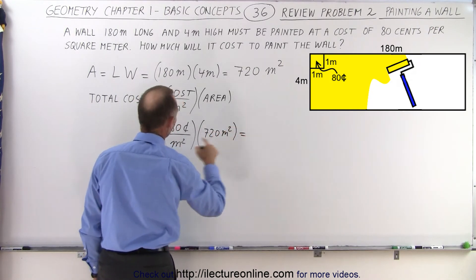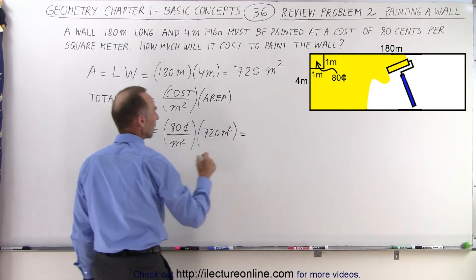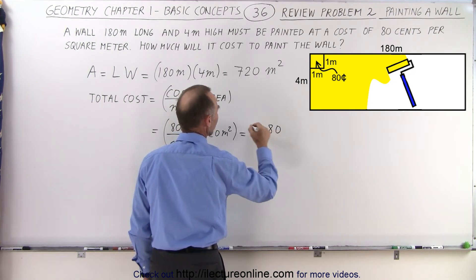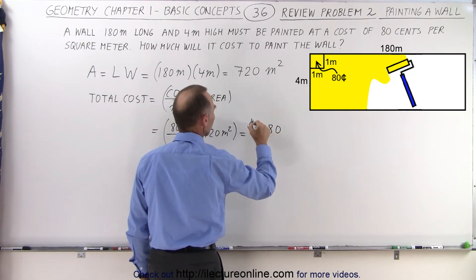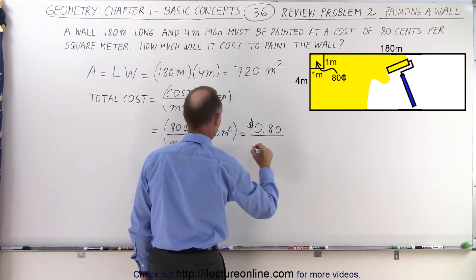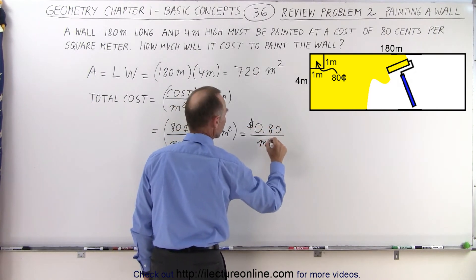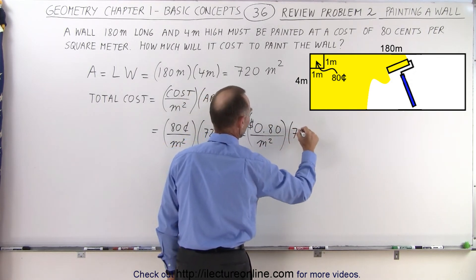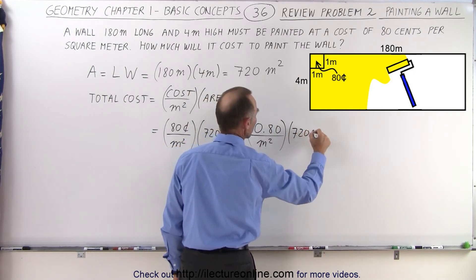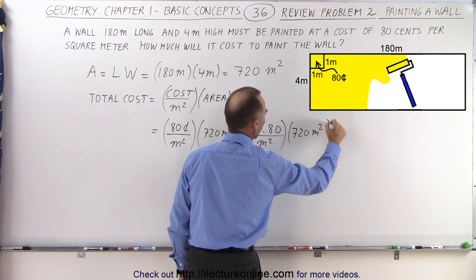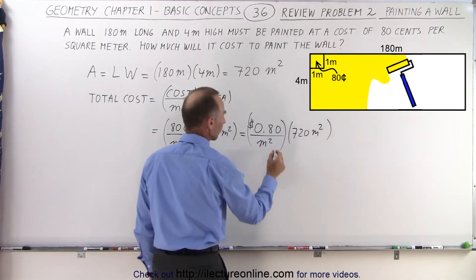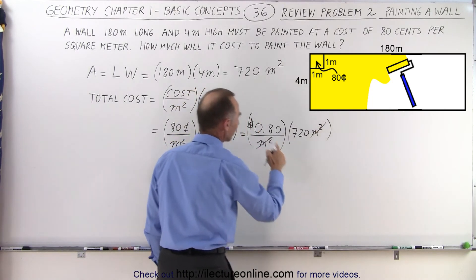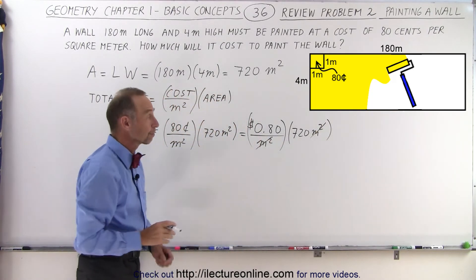So we're going to convert that to dollars: that's 0.80 dollars per square meter, and we're going to multiply that times 720 meters squared. You can see that the meters squared cancel out, and we end up with dollars.